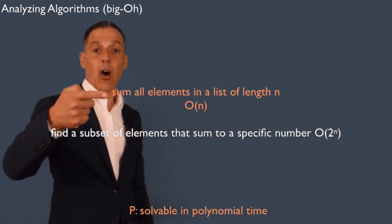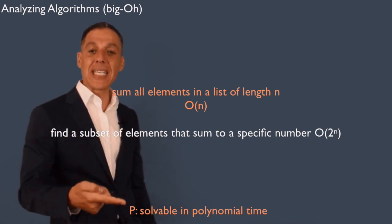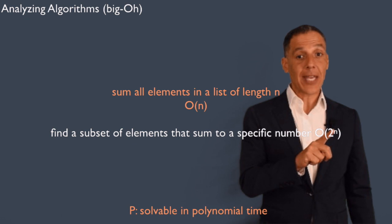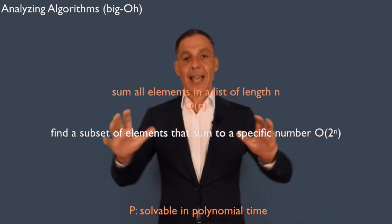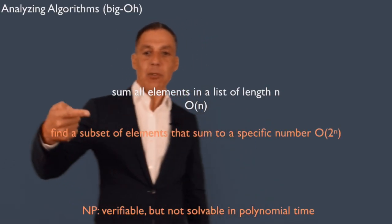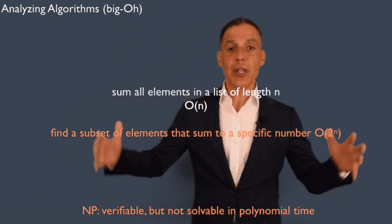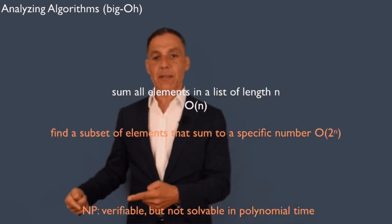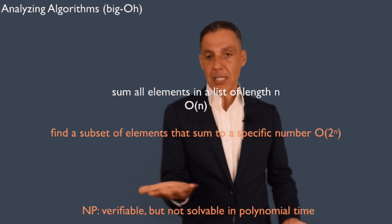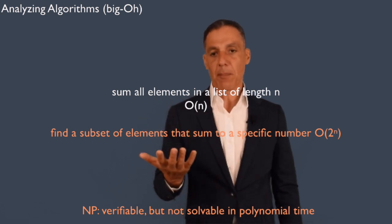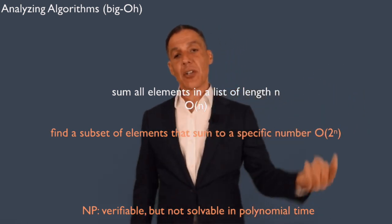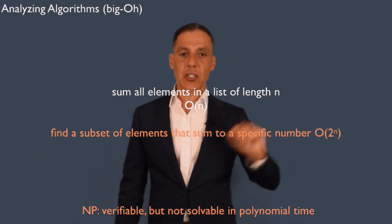The summing algorithm is said to be a problem in P — solvable in polynomial time. N is a polynomial, N squared is a polynomial, N cubed is a polynomial, but 2 to the N is not. Problems in the class P can, within limits, be solved in a reasonable amount of time. Problems like the subset sum problem — where you have to look at an exponential number of things — are called NP. I can verify a solution trivially by summing it up, but I can't solve it in polynomial time because I have to do that thing 2^n times.